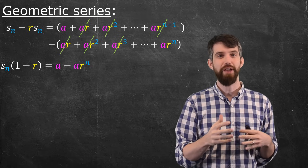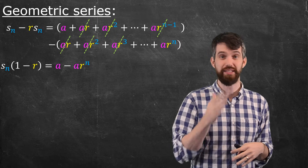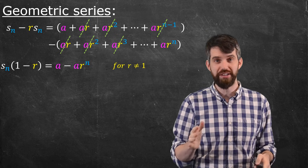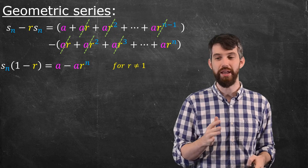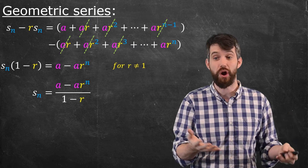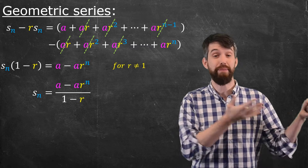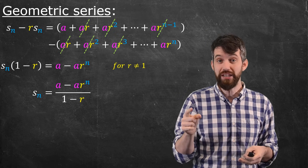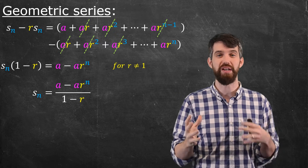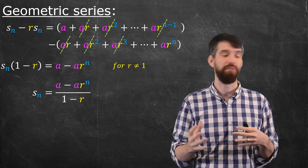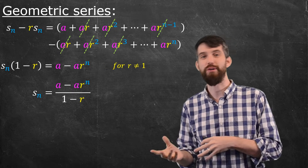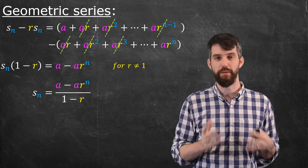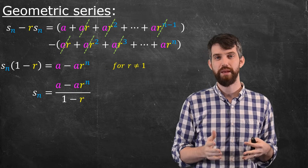If I focus on the special case where r is not equal to 1, I can divide out by 1 minus r and get that my partial sum is a minus ar to the n, divided by 1 minus r. Of course, if r is equal to 1, I can't do that — I'll talk about that in a moment.